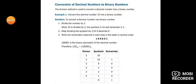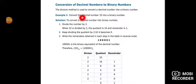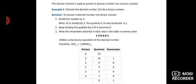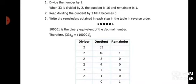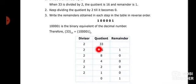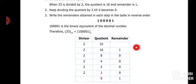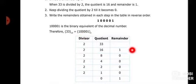Now we look at the conversion of decimal numbers to binary numbers. For this we will use the division method. Suppose 33 is the decimal number. We will make three columns: one for divisor, one for quotient, and one for remainder. We take 33 and divide it by 2 — because 2 is the base for binary. We keep dividing until we get 0. We write down all the remainders on the right hand side, then read them from bottom to top to get the binary result, written with base 2.